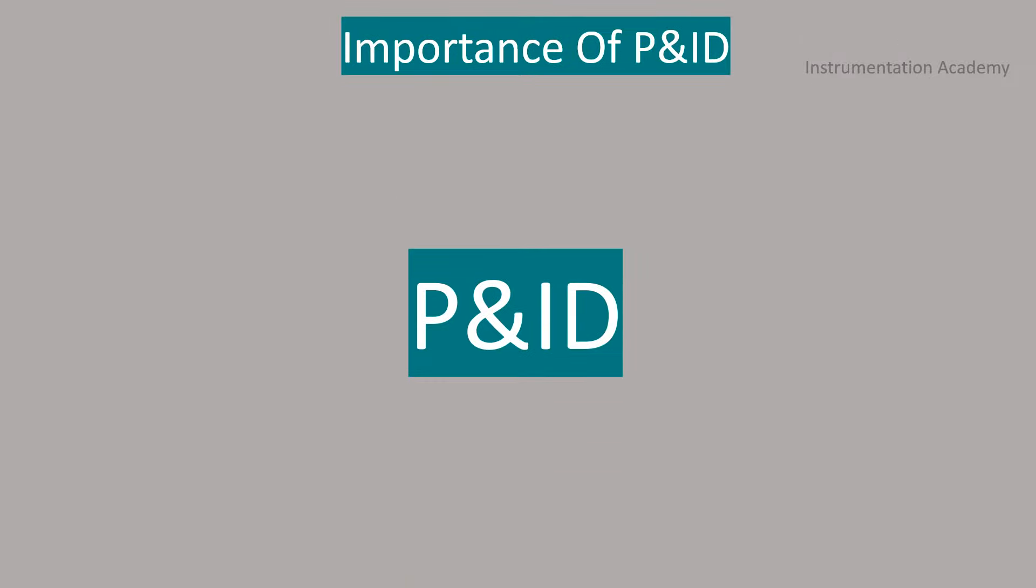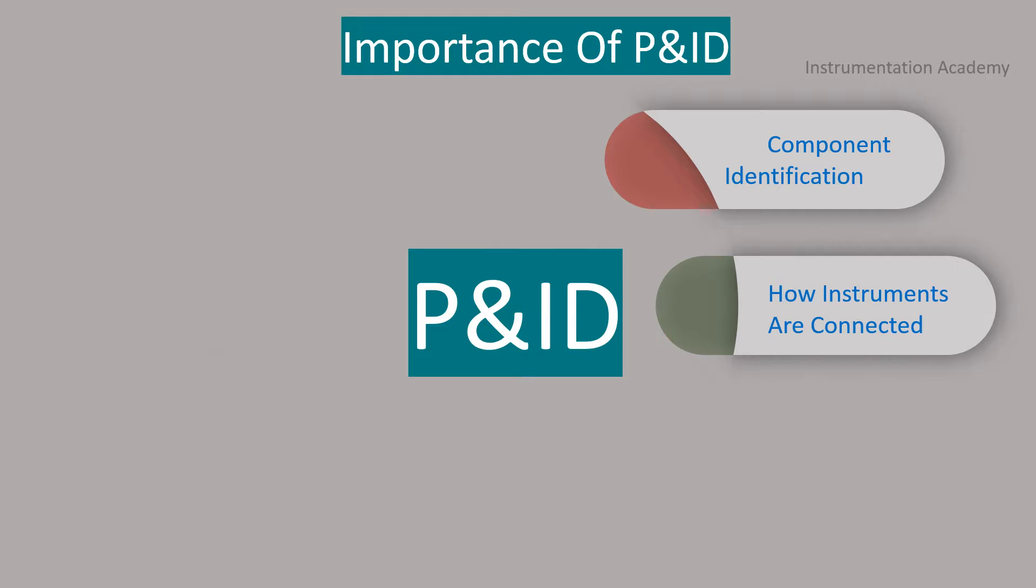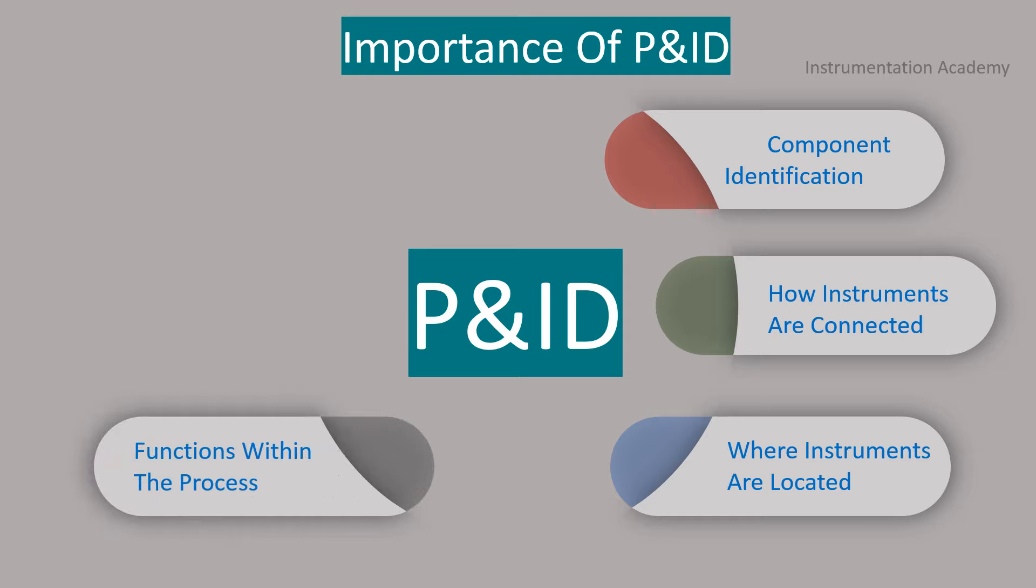Importance of P&ID. P&ID is used for identification of components in a process plant. It shows how instruments are connected and where they are located. It also shows the functions within the process. It is used for plant construction and process monitoring and also for troubleshooting in the plant.